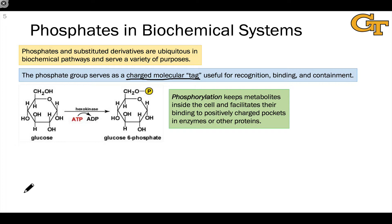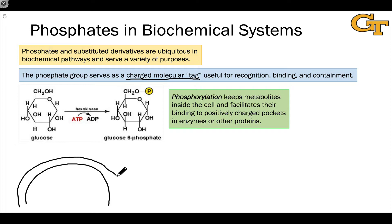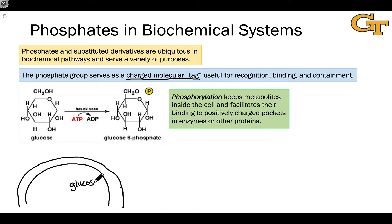Phosphate also enables containment of a molecule within the cell membrane. The cell membrane is a lipid bilayer consisting of phospholipids, which are charged on one end and hydrophobic on the other. The hydrophobic portions tend to sit in the middle of the membrane, while the hydrophilic, charged portions face the outside and inside. Many molecules, including glucose — a neutral molecule — can diffuse readily through the cell membrane, coming in and out relatively easily.